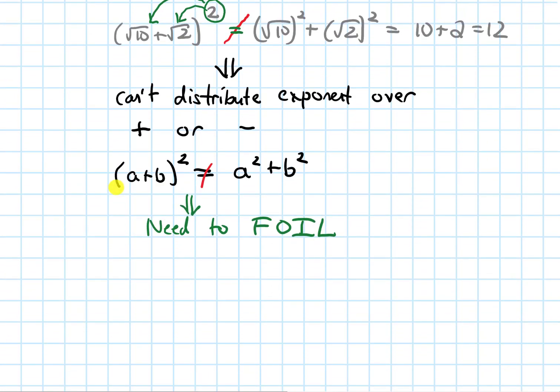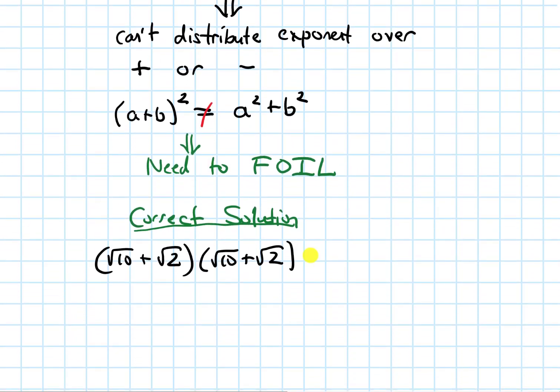Let's talk about a correct solution. We had root 10 plus root 2 being squared. And to work that out, I have to multiply it by itself, so this thing multiplied by itself. And now I have to foil it or distribute it all out.